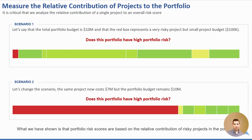When implementing this, organizations are looking for a consistent risk score. But I want to point out that when you're measuring this, the portfolio risk is going to change — it's dynamic. It's dynamic for a number of reasons: based on your budget, based on the number of projects, and based on the level of risk of those projects. I want to use a couple of quick examples to highlight this.